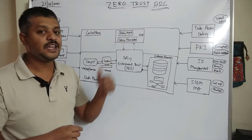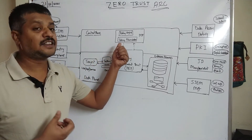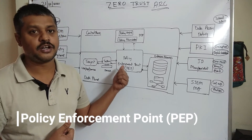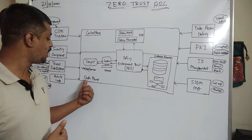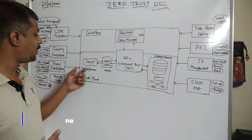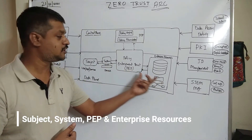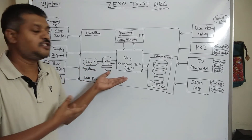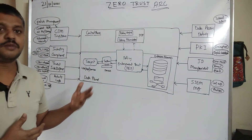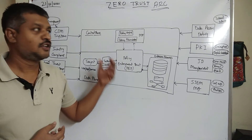The policy administrator will initiate some sessions. We also have the policy enforcement point and enterprise resources — this is the actual access. Now, who is the subject? The subject may be a user, an application, a device, or any services. We discussed previously that there are so many access surfaces.